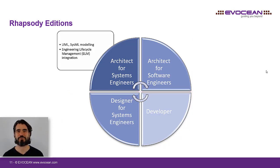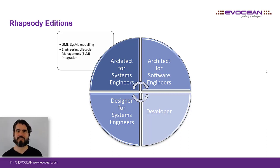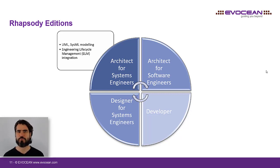Let us start with the Architect for System Engineers. The main focus is modeling with SysML and UML in the system engineering domain. So if you want to analyze, trace and elaborate requirements, create a system specification or an interface design document, or make architecture trade-offs — maybe with parametric evaluations — all this can be achieved with the Architect for System Engineers.